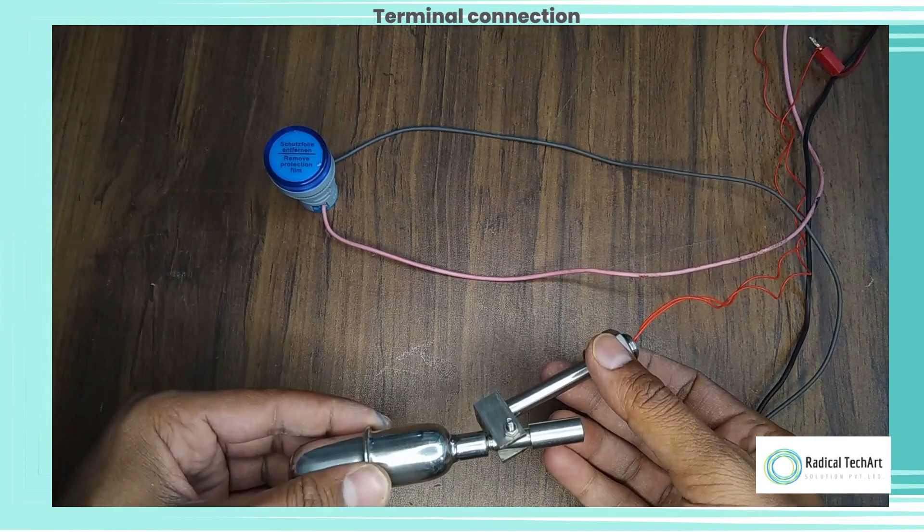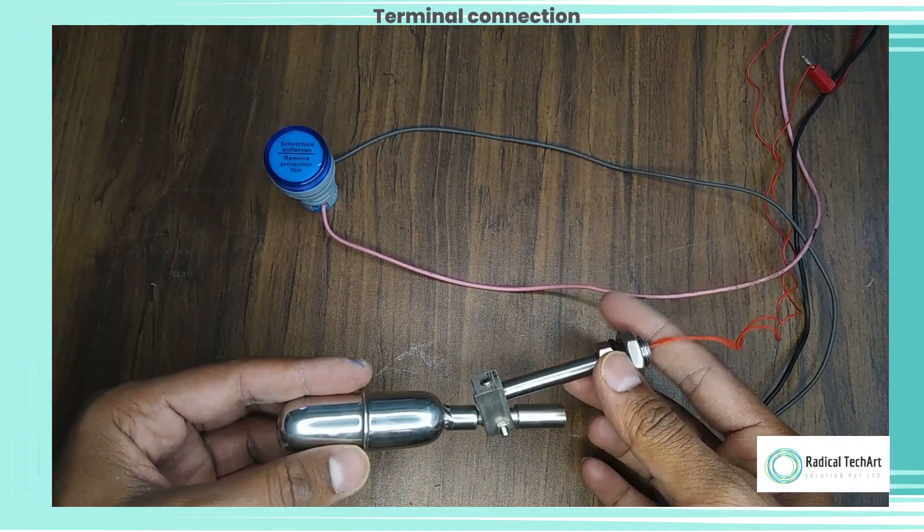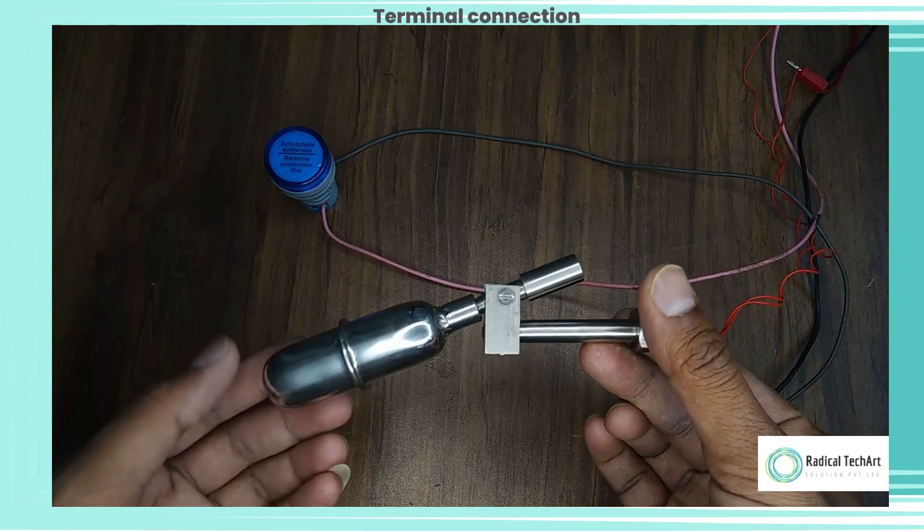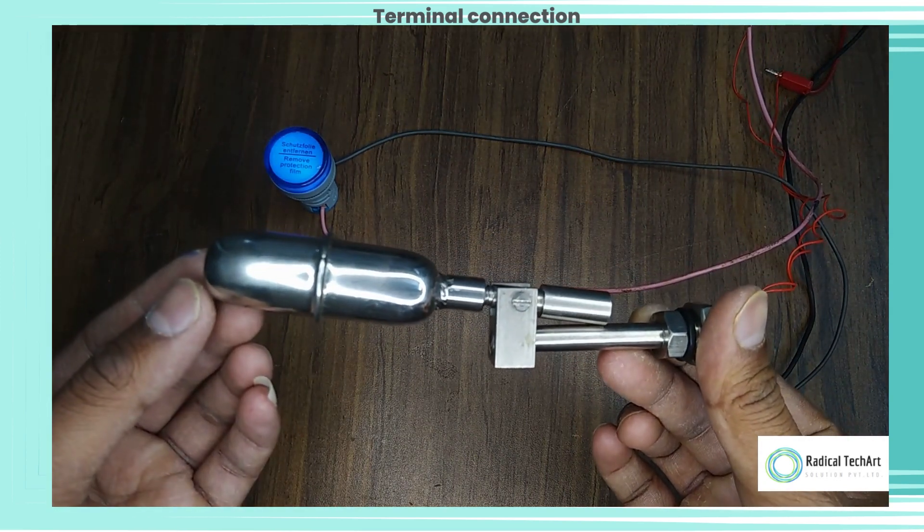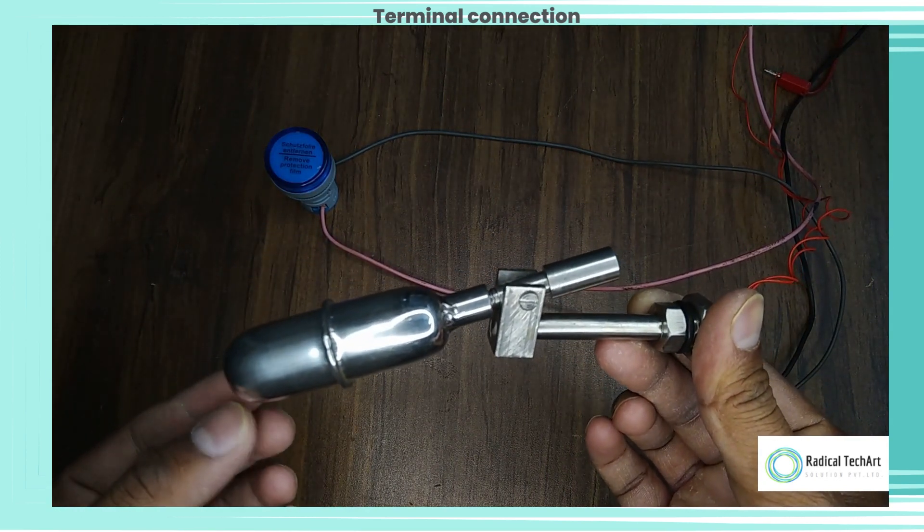To turn on an LED bulb from a side-mounted level switch, you will need to connect the switch to a power source and a relay that can operate the LED bulb. Here are the general steps to follow.